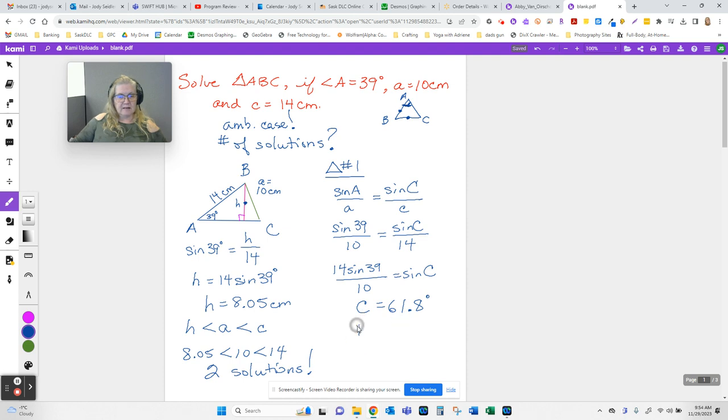Now that I know what angle C is, the next easy thing to find is angle B. We know all three angles of a triangle add up to 180. So if I take 180 and I subtract the 39, which is angle A, and subtract the 61.8, which is angle C, I find out that B is 79.2.